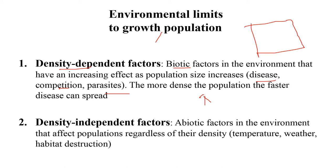Density-independent factors are abiotic factors like temperature, weather, and habitat. These do not depend on density. For example, in high-temperature desert regions, population density is low; in cold Arctic regions, density is also very low — temperature does not depend on density. So biotic factors are density-dependent, and abiotic factors are density-independent.